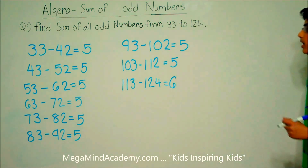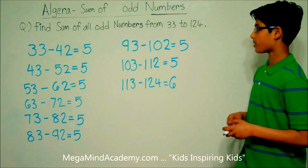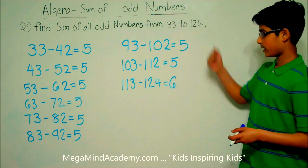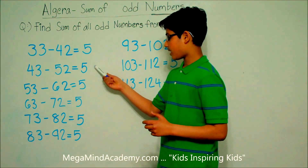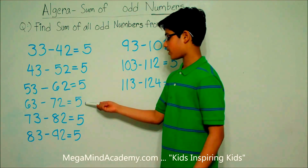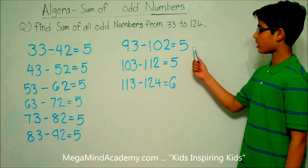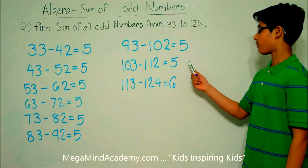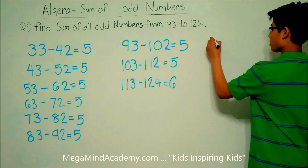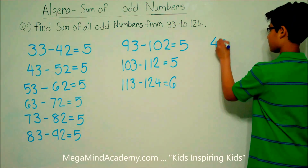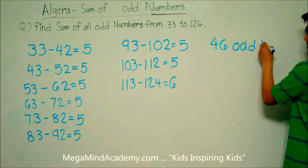So, let's add these numbers together and find out the total number of odd numbers from 33 to 124. 5 plus 5 is 10, plus 5 is 15, plus 5 is 20, plus 5 is 25, plus 5 is 30, plus 5 is 35, plus 5 is 40, plus 6 is 46. So, there are 46 odd numbers.